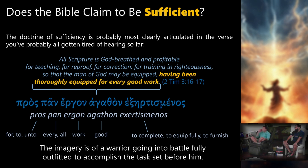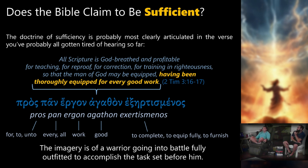Interesting thing: when Paul says 'all Scripture,' what does he probably have in mind? The Old Testament — because the New Testament hasn't been fully written yet. There are certain things he viewed as Scripture at that time — he quoted Luke alongside Deuteronomy and called it Scripture — but broadly speaking, he's probably talking about the Old Testament. Which is really cool, because that means even the New Testament itself is our cup overflowing.